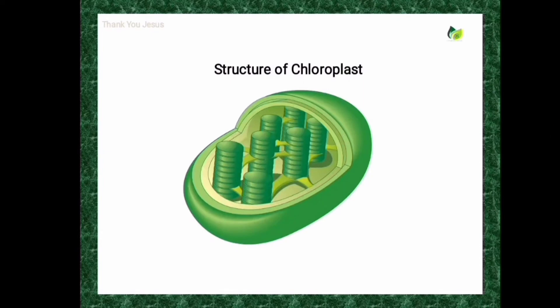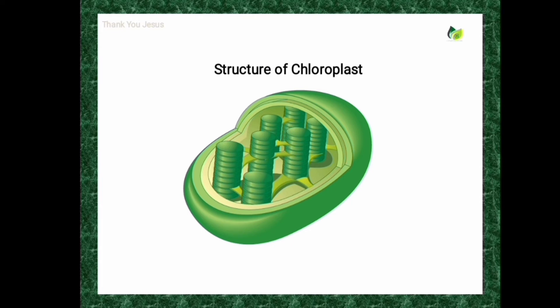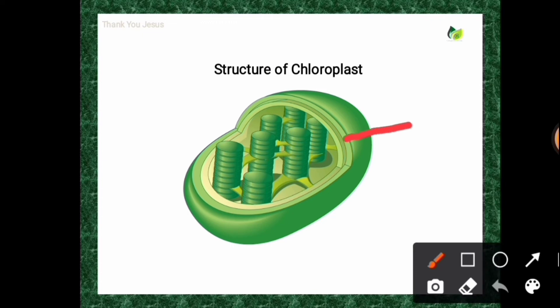Generally the size of chloroplasts varies from species to species. The chloroplast is bounded by two unit membranes, named the outer chloroplast membrane and the inner chloroplast membrane. The outer membrane is freely permeable to small molecules.